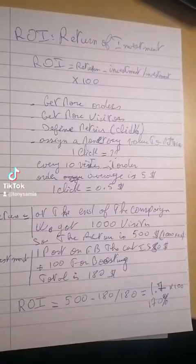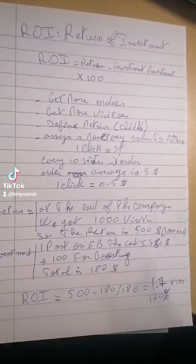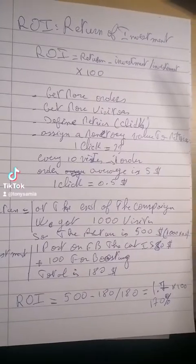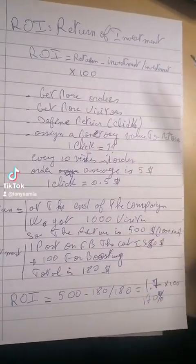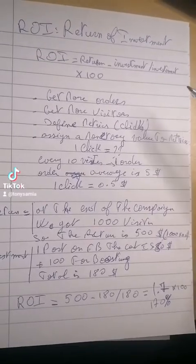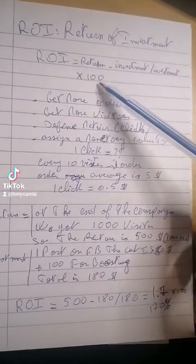To know what is the return on investment, in this video I will quickly go step by step on defining the values needed and how you can calculate the ROI. The ROI is Return on Investment, and the formula is: return minus investment, divided by investment, multiplied by 100 to get it as a percentage.